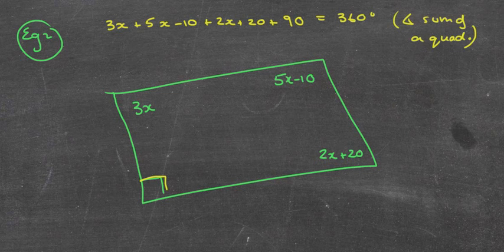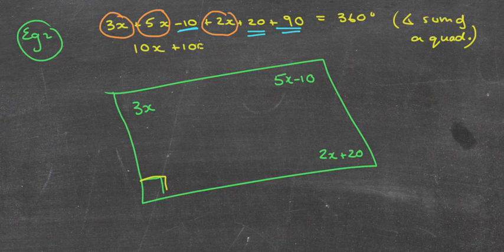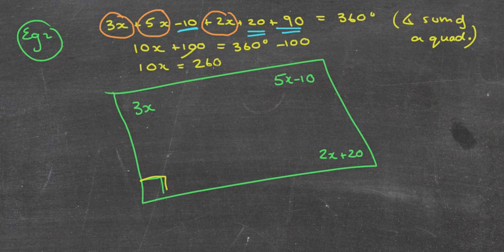That looks pretty messy, so I'm going to add the x's together: 3x plus 5x is 8x, plus 2x is 10x. Now adding the numbers: minus 10 plus 20 is positive 10, plus 90 is 100. So I get 10x plus 100 equals 360 degrees. Take the 100 away: 10x equals 260 degrees. Divide by 10: x equals 26.